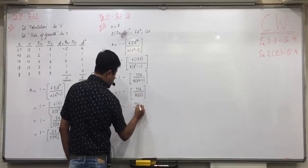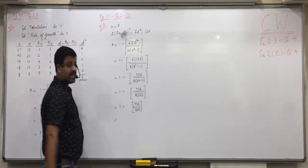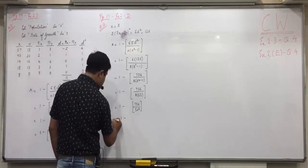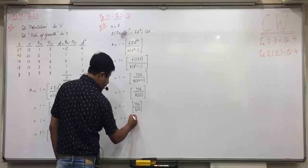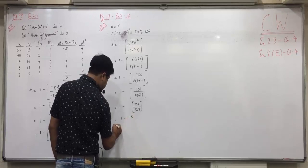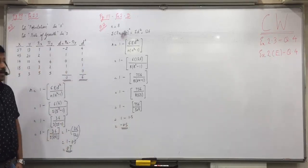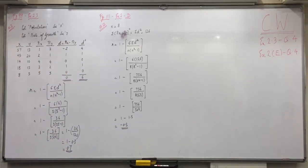1 minus 756 upon 504. 8 into 63, do you all get 504? Yes. And what is 756 upon 504? 1.5, exactly? Yes. So minus 0.5. Okay, moderate degree of negative correlation. Neither high nor low, moderate. Exactly in between.